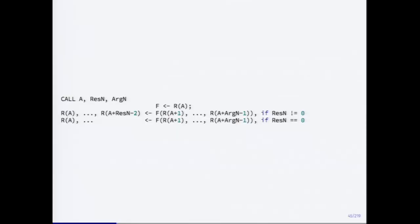The interesting instruction is the call instruction, because without calls we can rarely write any useful code. The semantics are: you specify a register from which to take a function value, then you call it with all subsequent registers as arguments. So on the stack register space, you have the function followed by the arguments. You also specify the number of expected result values, since Lua has multiple return values.